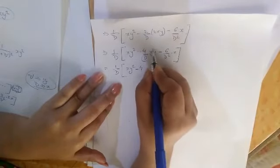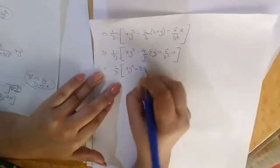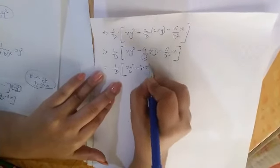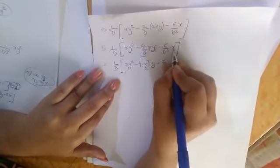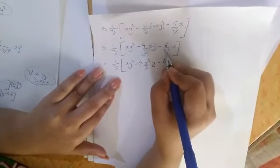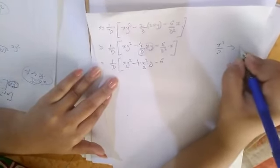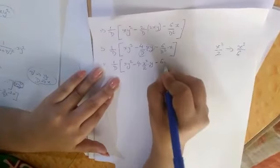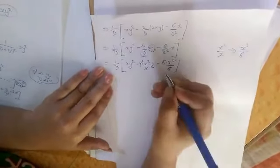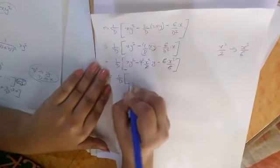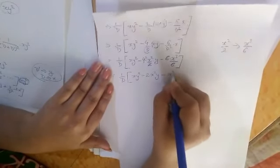Now we have to integrate this xy² with respect to x, so at that time we will treat y as a constant, so y² as it is rahega, x ka integration ho jayega x²/2 into y will be as it is. Similarly minus 6 will be as it is, x ko humko do baar integrate karna hai with respect to D², so that will be, ek baar karenge to x²/2 and then again will integrate you will get x³/6. So here I am writing it directly, so 6 and 6 cancel, yaha pe bachega 2. So here I get 1 by D into xy² minus 2x²y and minus x³.